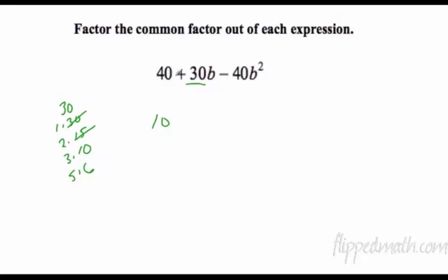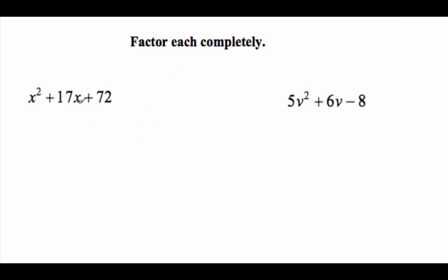Then I need to look, I have b squared, b, I have no common b. So 10 is my greatest common factor. I go back and divide: 40 divided by 10 is 4, plus 30 divided by 10 is 3 (don't forget our b), minus 40 divided by 10 is 4b squared. Alright, factor. So Australian method: first times last is 72.